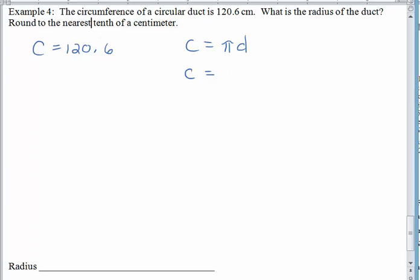So here we go. We have the circumference is 120.6. Always a good idea to write your formula out before you start replacing values. Circumference is pi times the diameter. So this circumference is equal to, hang on, that circumference is already known. We're going to fill it in with 120.6.